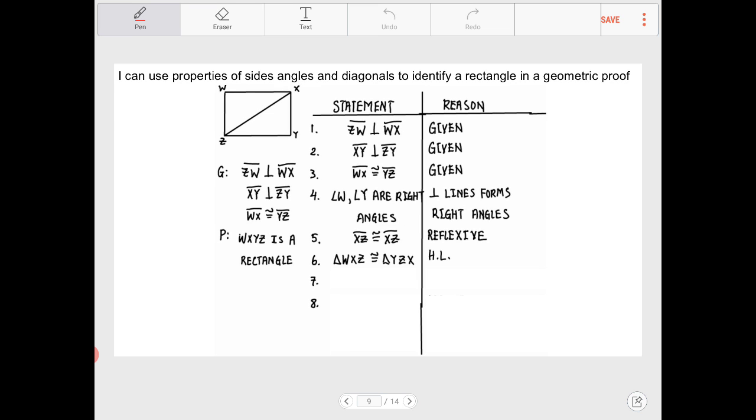Line number seven, once we've declared that the two right triangles are in fact congruent based on hypotenuse leg, we can then also declare that the side lengths WZ and XY are going to be congruent because again understanding that corresponding parts of congruent triangles therefore must be congruent.